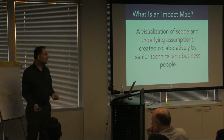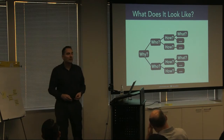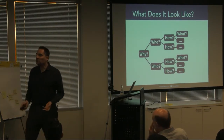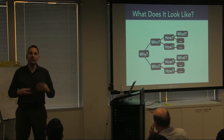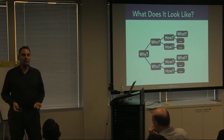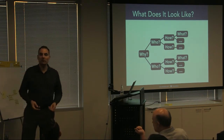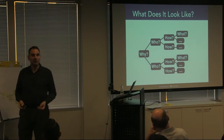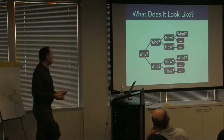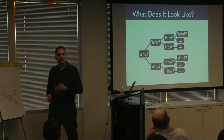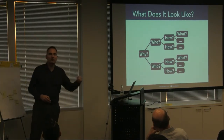What does an impact map look like? It's something like a mind map — you could also compare it structurally to a fishbone or Ishikawa diagram, or a cause-and-effect diagram, just sort of turned in on itself. There's an element of the five whys, except we ask a different question at each level. It's all about helping you structure your problem-solving approach.